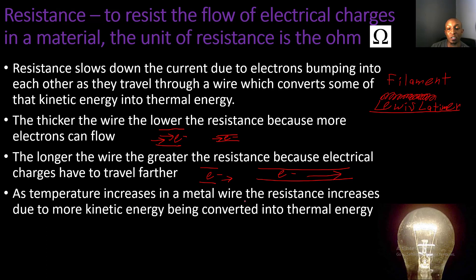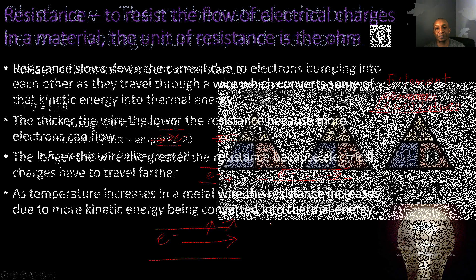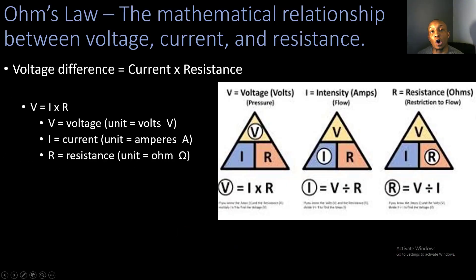As temperature increases in a metal wire, the resistance increases due to more kinetic energy being converted into thermal energy. This makes sense because as the wire heats up, more electrons are converted into thermal energy, meaning more heat energy is actually being released from the wire.